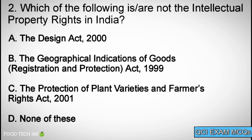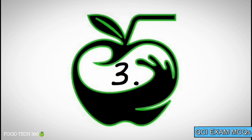Question number two: Which of the following are not the intellectual property rights in India? Options: A. The Designs Act 2000, B. The Geographical Indication of Goods Registration and Protection Act 1999, C. The Protection of Plant Varieties and Farmers Rights Act 2001, D. None of these. Correct answer: D. None of these.